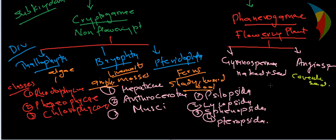In Angiosperm, angio means covered — the seed is covered inside a fruit. This is a broad division in Angiosperm where the ovule is enclosed in the ovary, hence the seed is enclosed in the fruit. Examples of Gymnosperm include Cycas, and examples of Angiosperm include Eucalyptus and Wolffia, which is the smallest plant.